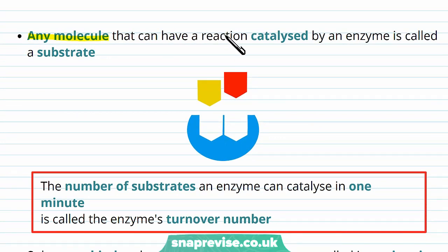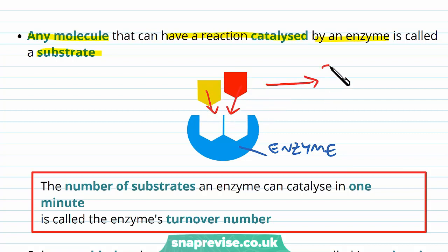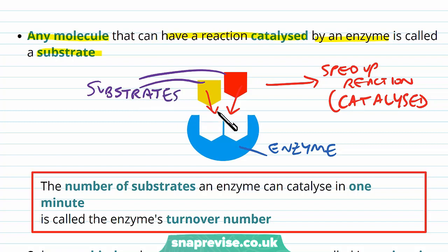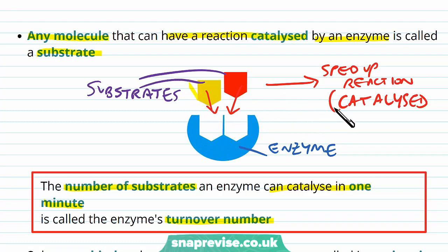Any molecule which can bind to an enzyme and have a reaction catalyzed by it is called a substrate. It's a similar word to reactant, but substrates specifically bind to enzymes. The number of substrates an enzyme can catalyze in one minute is called the enzyme's turnover. The higher the enzyme's turnover, the more substrates it can bind in a minute. Because enzymes are reusable, once one reaction is done, another set of substrates can come in.